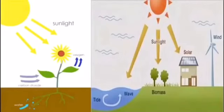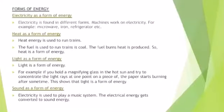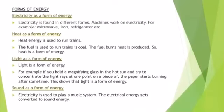Now we are going to discuss the forms of energy. Electricity is used as a form of energy in different forms. Machines work on electricity, for example: microwave, oven, iron, refrigerator, etc.